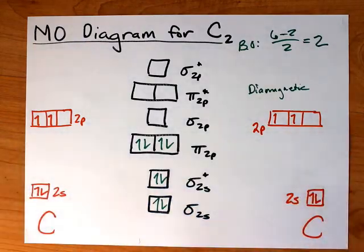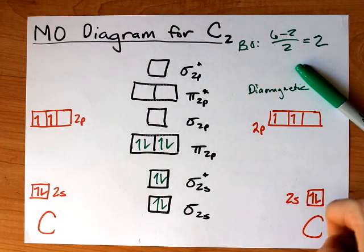All right. That's pretty much it. That's the molecular orbital diagram for C2. It's been good to see you. Thanks for coming out.